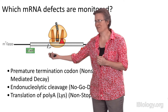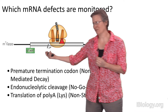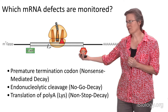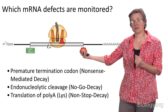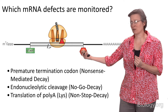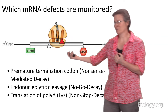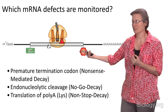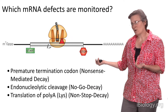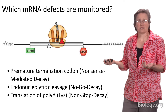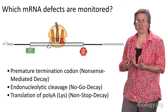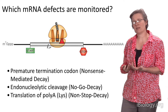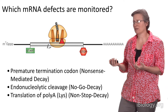Also, typical messenger RNAs have a start codon that signals the beginning of an open reading frame and a stop codon that signifies the end, and what the cell would like to do is start at the beginning, go to the end, and make a full-length protein. There can be lots of events in RNA processing or mutations that would result in a messenger RNA that might not be optimal.